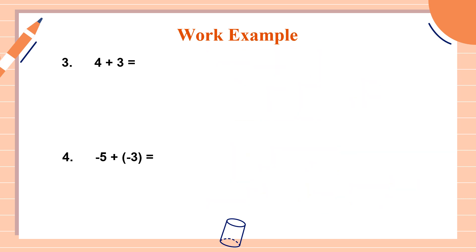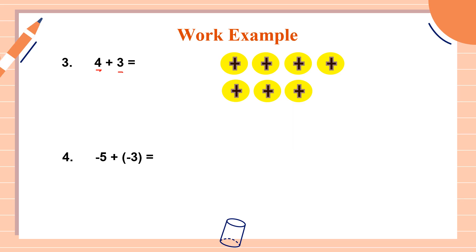Let's have example number three — what if both numbers are positive? Four plus three. Positive four means four yellow chips: one, two, three, four. Positive three means three yellow chips: one, two, three. Check if we have zero pairs — a zero pair is one yellow chip and one red chip. We don't have any. So we just count all the chips: one, two, three, four, five, six, seven. All positive, so our answer is positive seven. Four plus three equals positive seven.